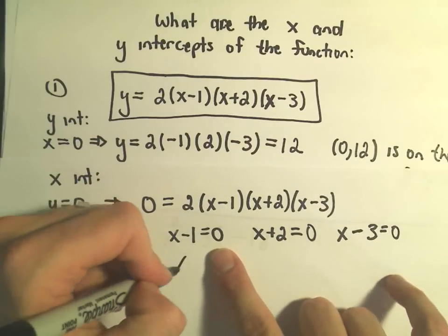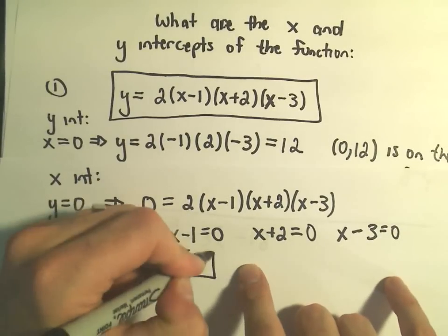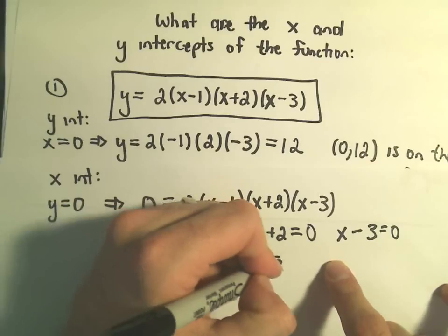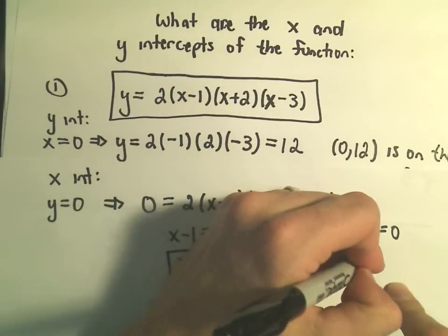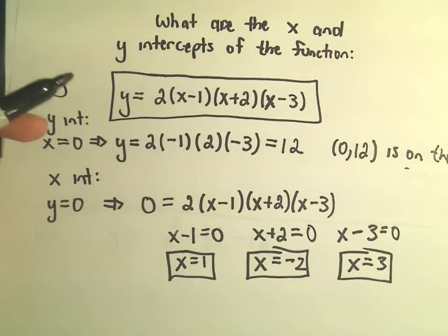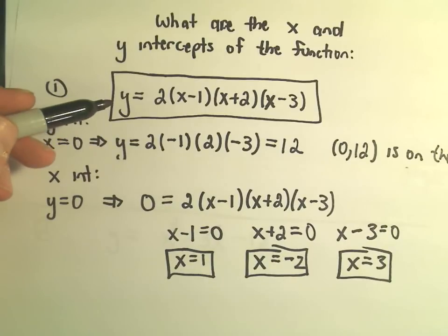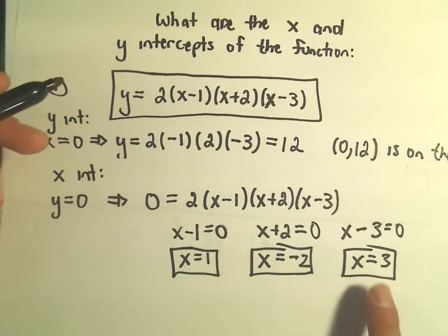If I solve the first equation, I get x equals 1. The second equation gives x equals negative 2. The third equation gives x equals 3. So this function has 3 x-intercepts at 1, negative 2, and 3.